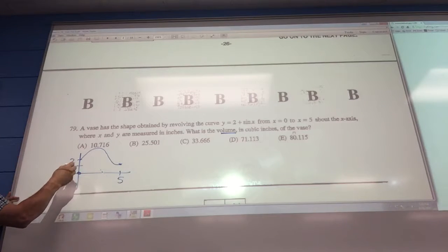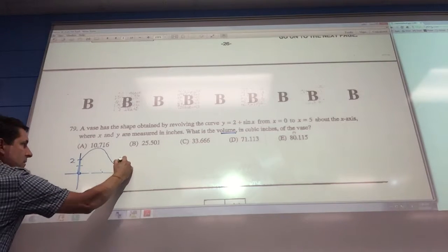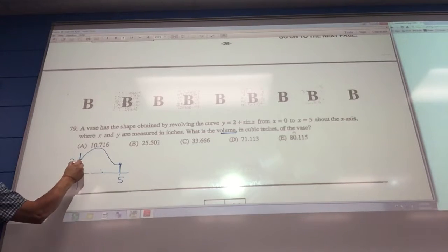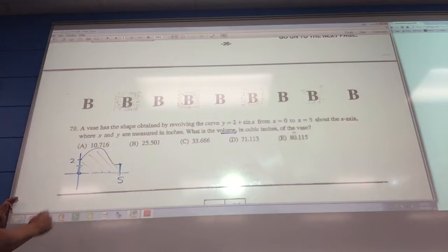And then they said x equals 0. That's the vertical line here. x equals 5 is the vertical line here. So we always shade the region, so the region we're looking at is this bugger.